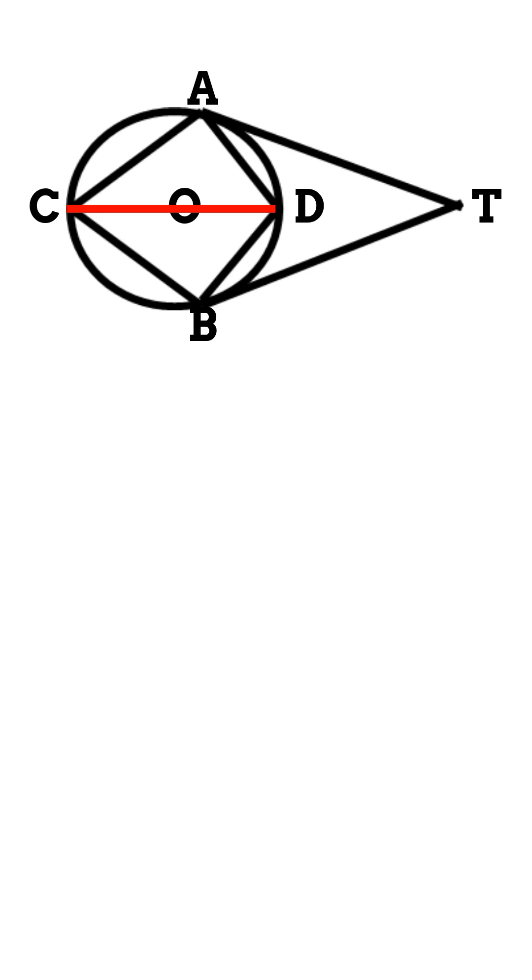Since opposite angles of the cyclic quadrilateral are supplementary, angle ADB equals 180 degrees minus 60 degrees equals 120 degrees. Since the angle at the center equals 2 times the angle at the circumference,